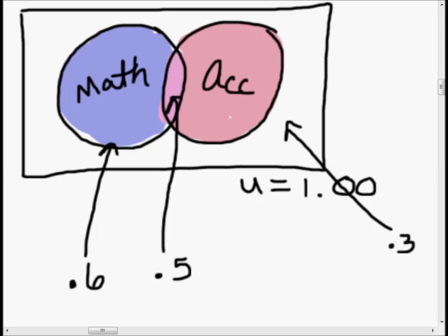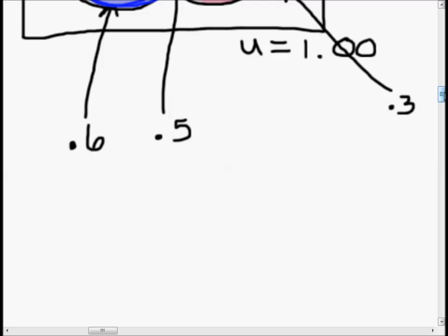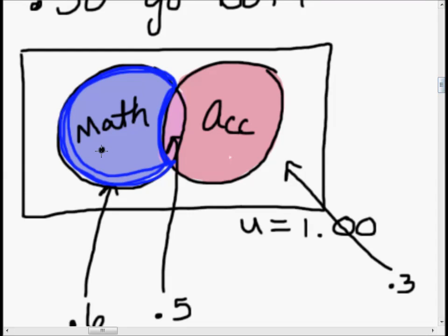Let's figure out the chance that she just goes to math — that Pac-Man shape without the overlap. We know the total chance she goes to math including accounting that same day is 0.6, and we know the chance she goes to both is 0.5. So subtracting 0.5 from 0.6, we get 0.1. That is the chance that she just went to math.